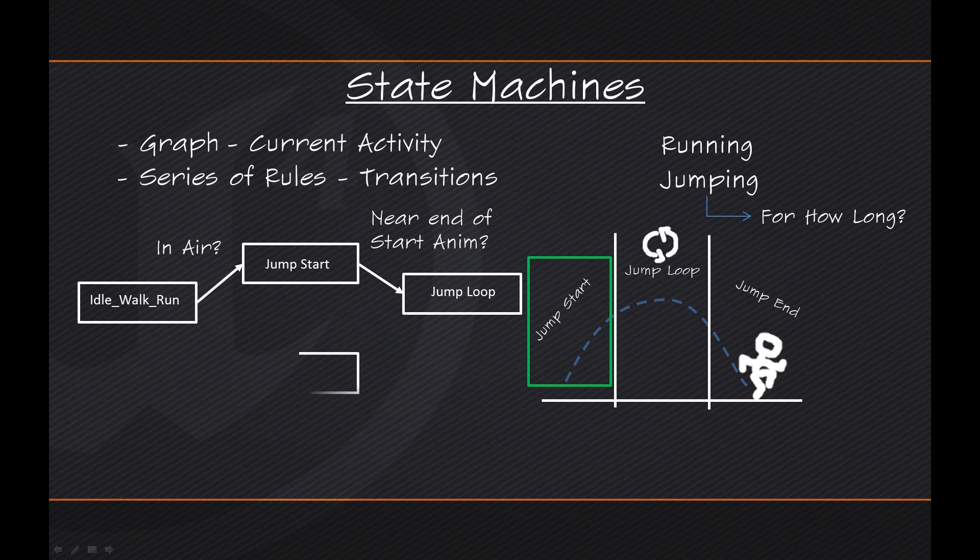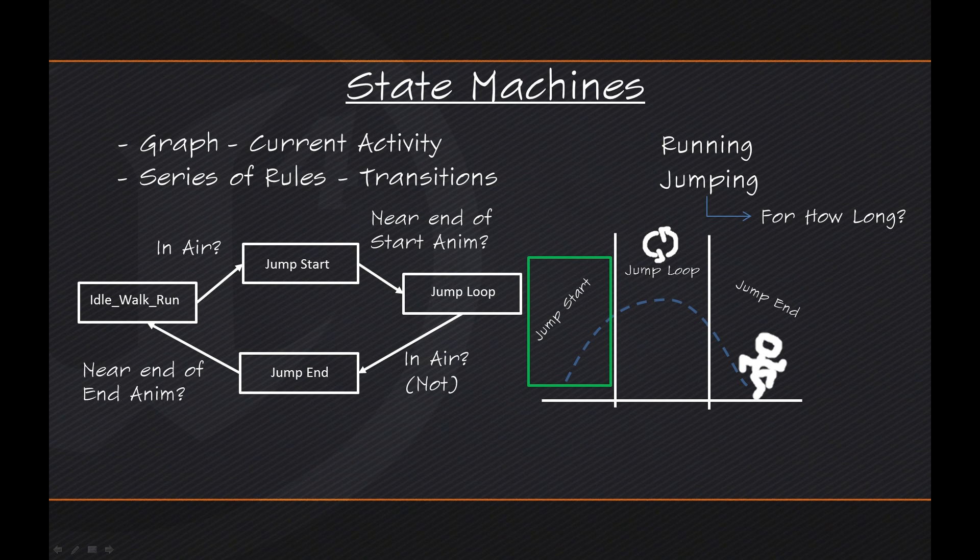So following the Jump Loop, the next logical state we would have is our Jump End state. The Jump End is simply going to be fired by asking, are we still in the air? If the answer is no, then we are going to go to the Jump End animation. So let's actually put that in parentheses here for clarity. Are we not in the air? And finally, our next transition out of Jump End would be to go back to our Idle Walk Run state here, since we are no longer jumping. And the transition rule for that would be, are we near the end of our Jump End animation? And if so, go ahead and proceed to the Idle Walk Run state.